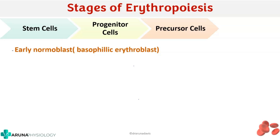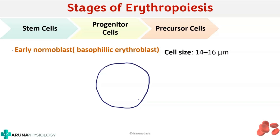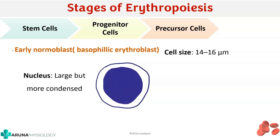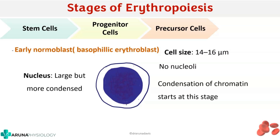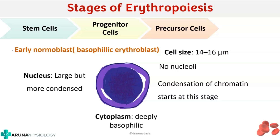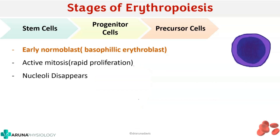The next cell is the early normoblast, also called basophilic erythroblast. The cell size is around 14 to 16 micrometers — slightly decreased. The nucleus is large but more condensed compared to the pronormoblast, so condensation of chromatin takes place at this stage. Importantly, there are no nucleoli here — in the pronormoblast there were two to three nucleoli, but at this stage nucleoli disappear. The cytoplasm is still basophilic. Active mitosis continues with rapid proliferation.